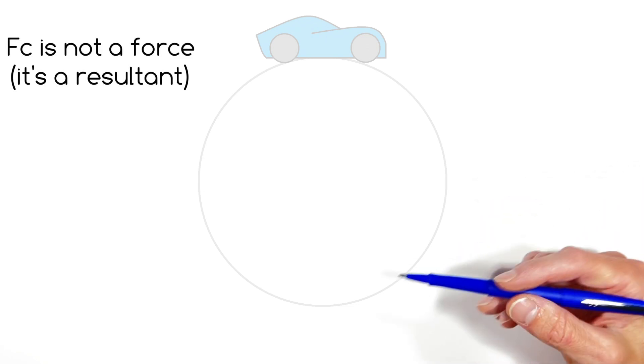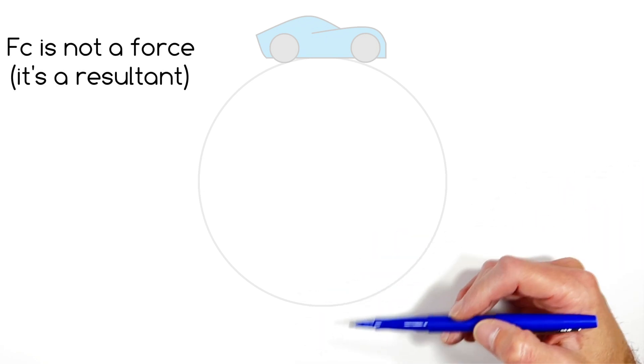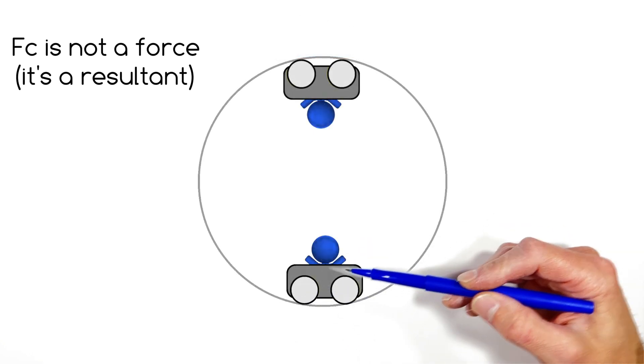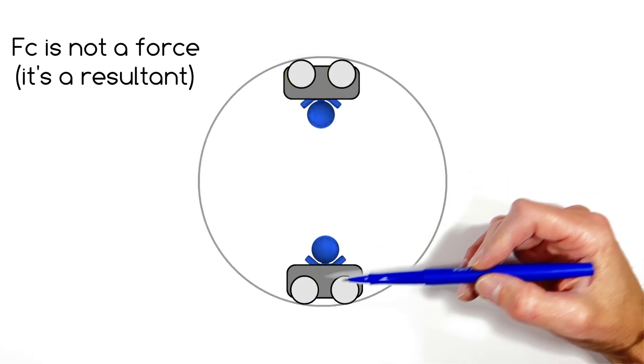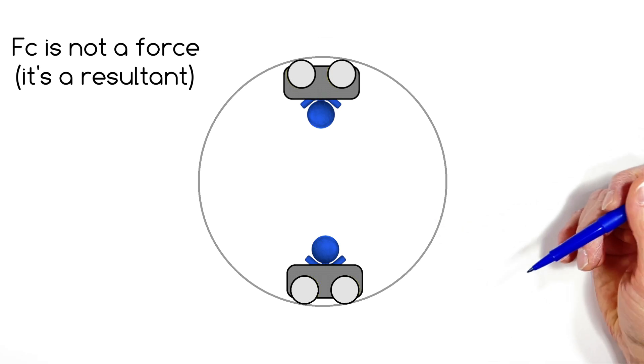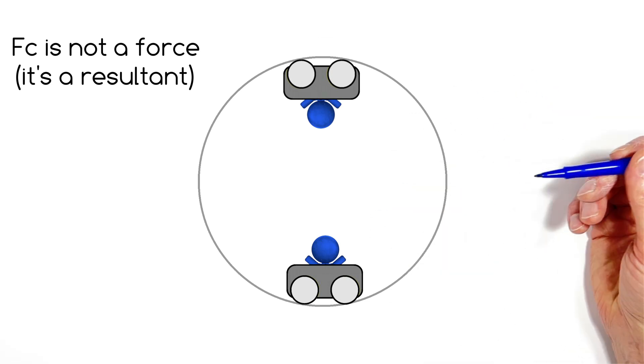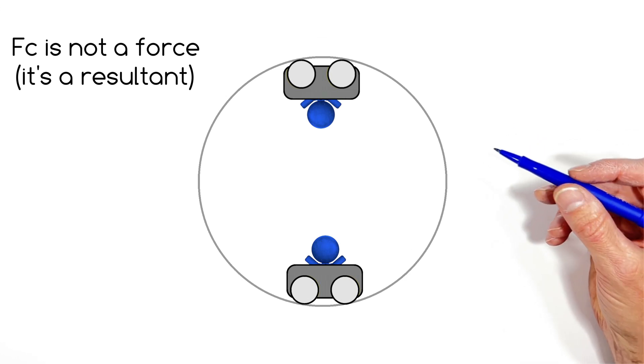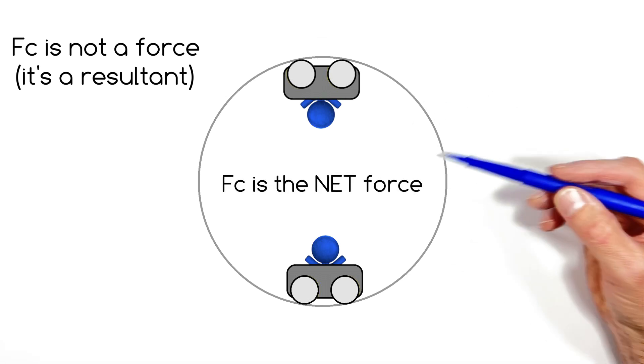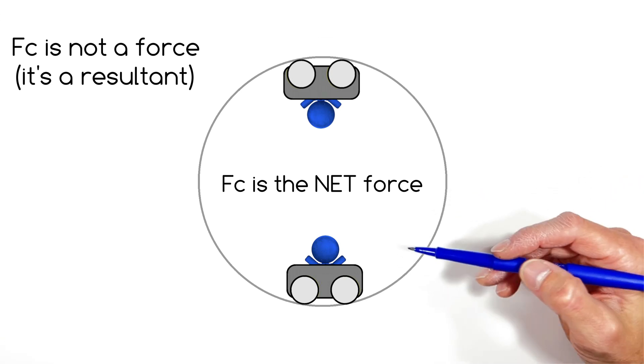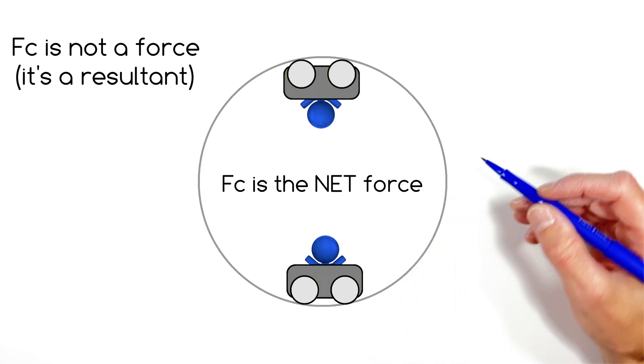The first is centripetal force is not a force which is actually acting on an object. If you were to draw a free body diagram for a roller coaster cart, you'd never actually show a centripetal force on that free body diagram. What gets lost is that the centripetal force is the net force on an object. It is the result of forces acting on an object, not the actual force acting on an object.